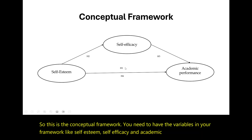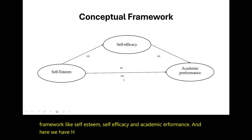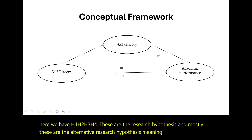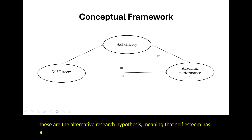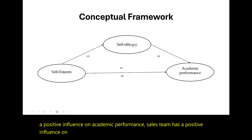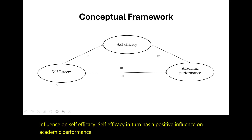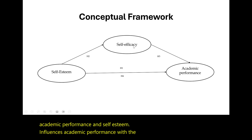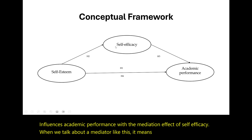Here we have H1, H2, H3, H4 — these are the research hypotheses, and mostly these are the alternative research hypotheses, meaning that self-esteem has a positive influence on academic performance, self-esteem has a positive influence on self-efficacy, self-efficacy in turn has a positive influence on academic performance, and self-esteem influences academic performance with the mediation effect of self-efficacy.